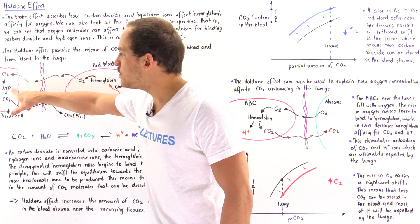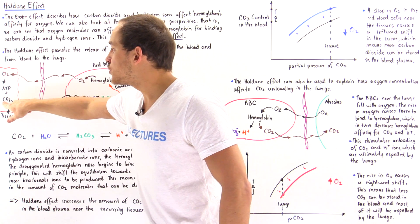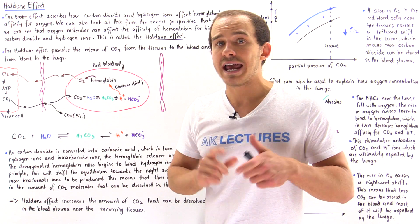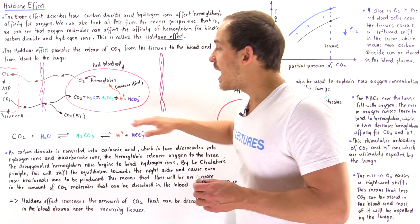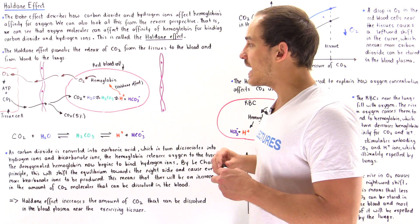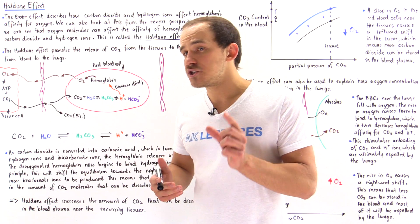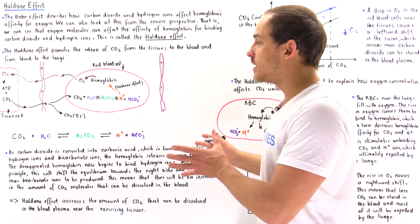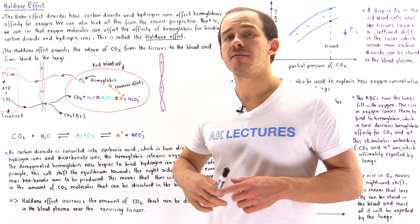These ATP molecules are used for muscle contraction, but CO2 molecules — a byproduct — are produced and cannot be used in any useful way. The CO2 molecules are expelled from the cell and enter the blood plasma of the nearby capillary. Because carbon dioxide is nonpolar, only a very small portion — about 5% — will actually remain dissolved in the blood plasma. The majority of it will enter the cytoplasm of the red blood cell.